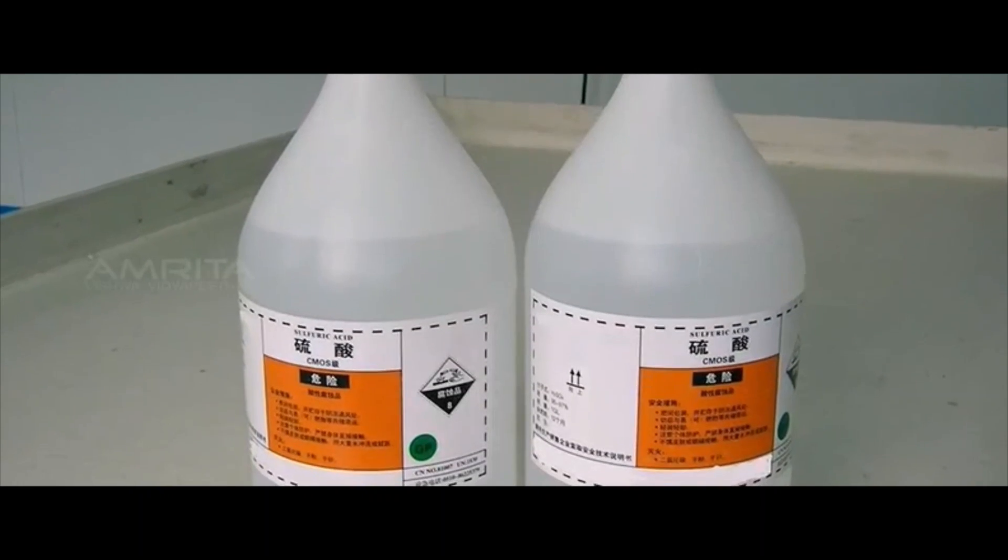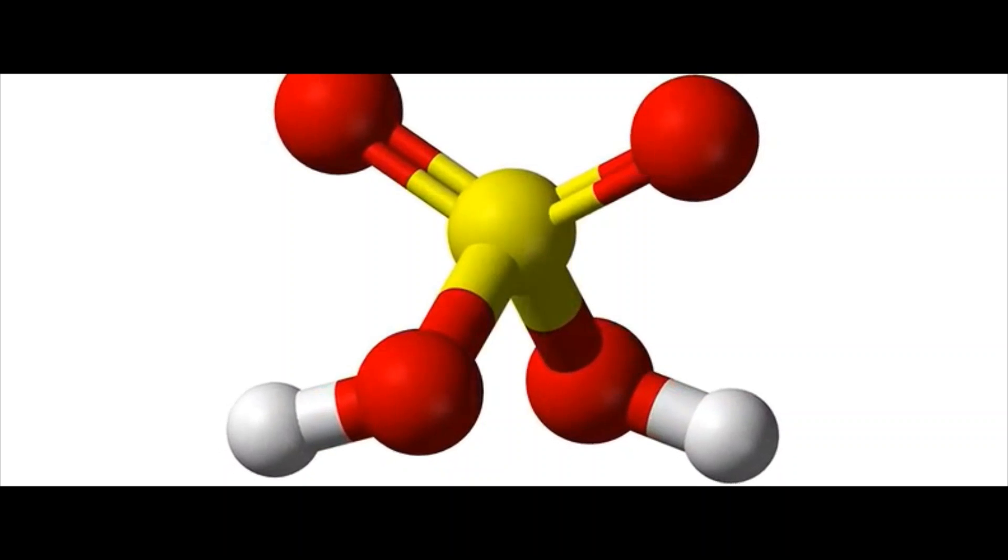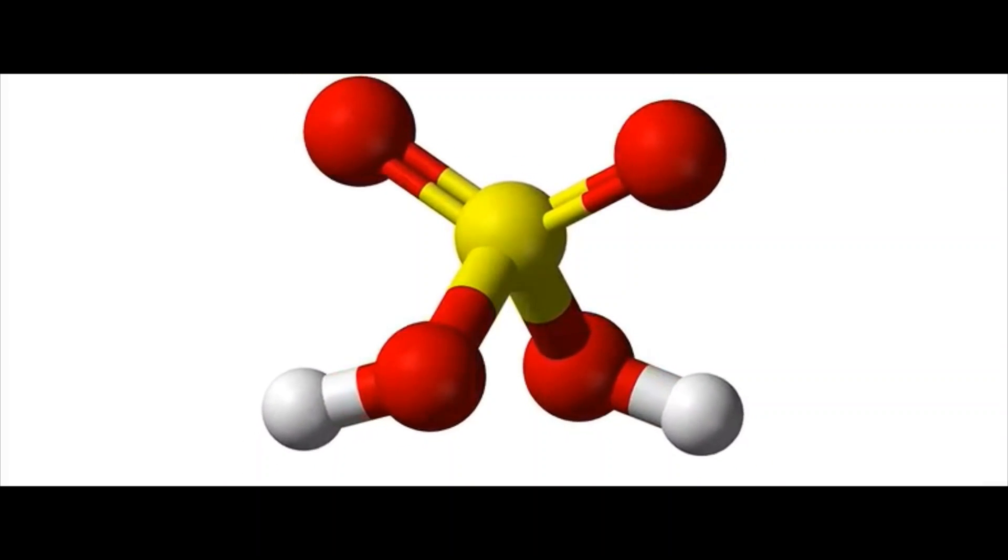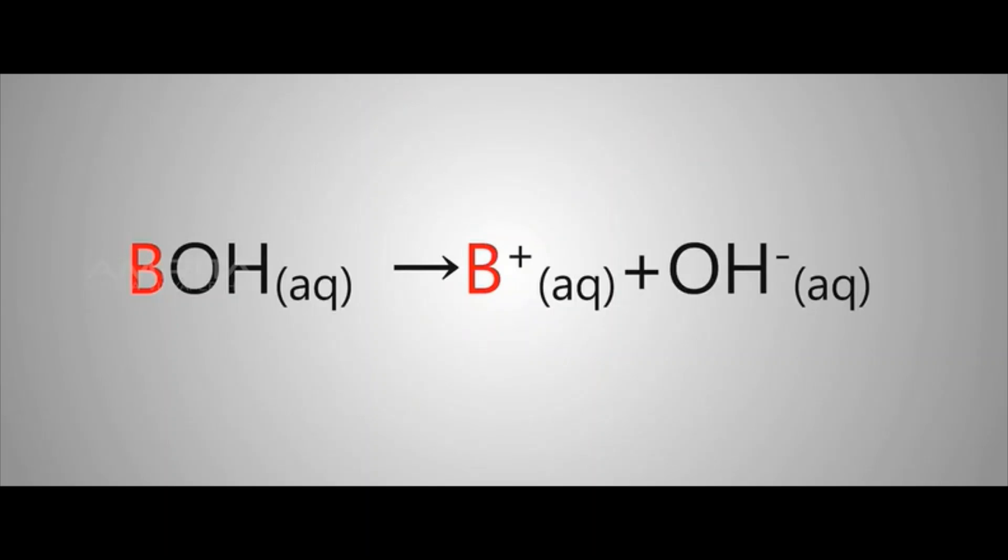According to Arrhenius concept of acids and bases, an acid is a substance which releases one or more H+ ions in aqueous solution, whereas base is a substance which releases one or more OH- ions in aqueous solution.